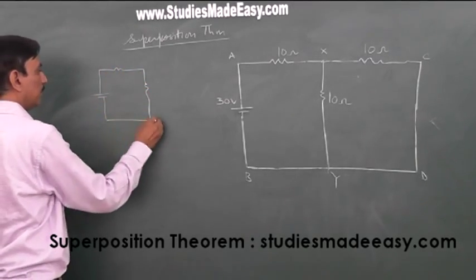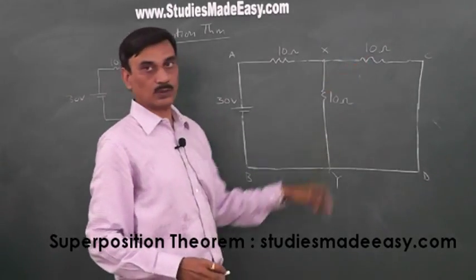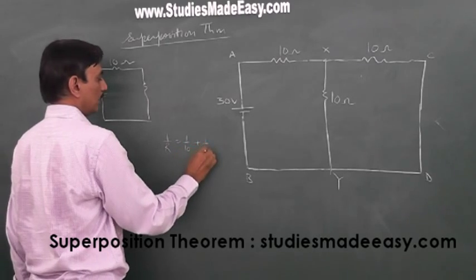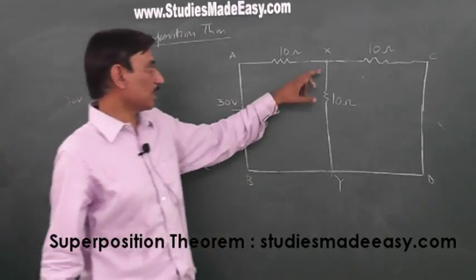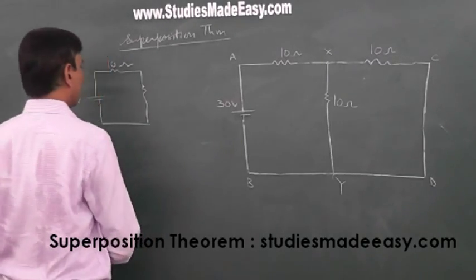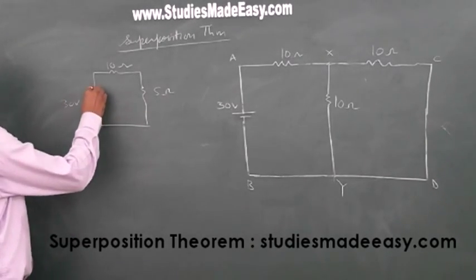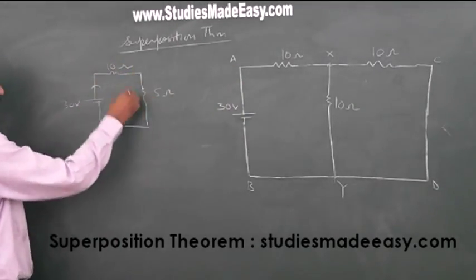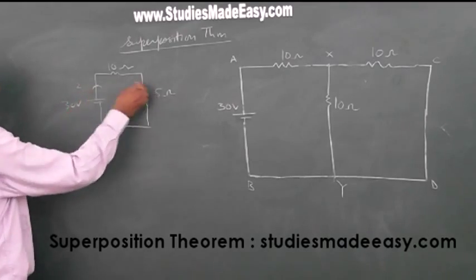So they are in parallel — 10 ohm and 10 ohm. Equivalent resistance using 1/R = 1/10 + 1/10 = 2/10, so R equals 5 ohm. So the equivalent resistance of these two is 5 ohm. Now the current which will come out of the 30V battery: 10 plus 5 equals 15 ohm in series. So current equals 30 divided by 15, that is 2 ampere.